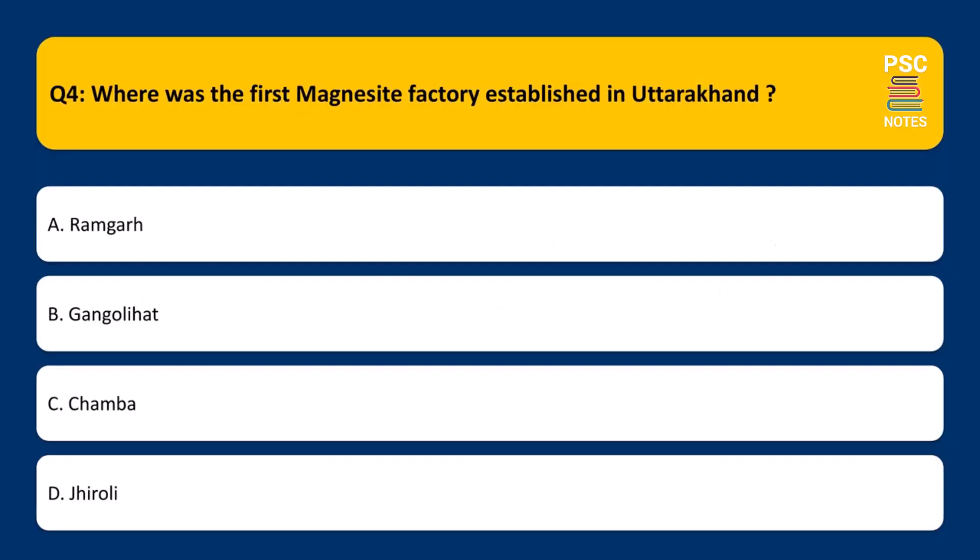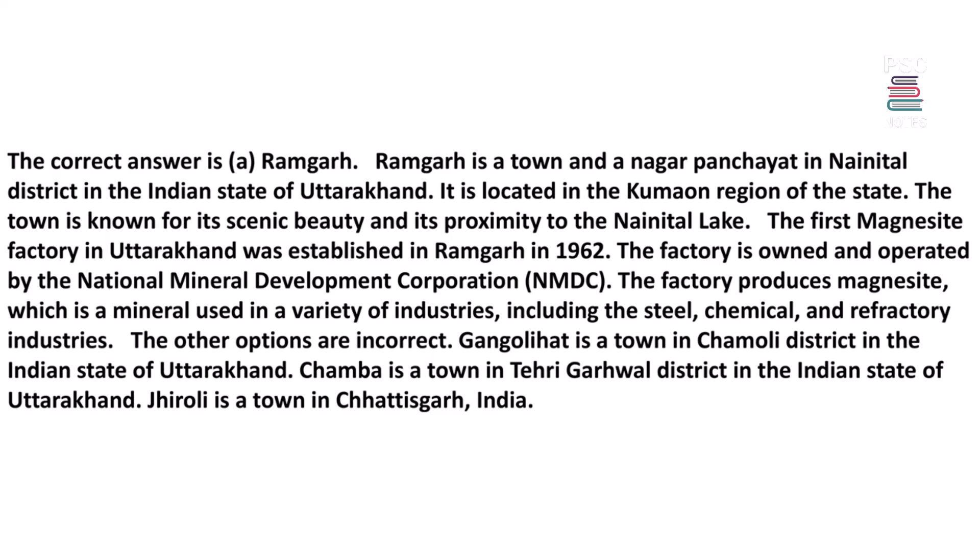Where was the first magnesite factory established in Uttarakhand? a. Ramgarh. b. Gangali Hat. c. Chamba. d. Yairali. The correct answer is a. Ramgarh.